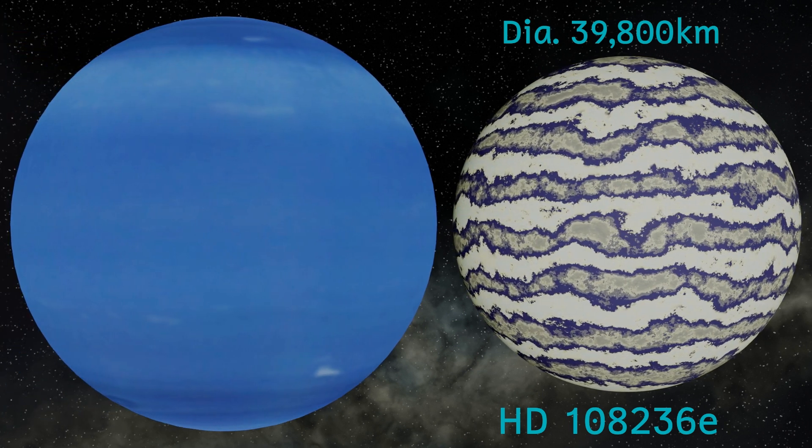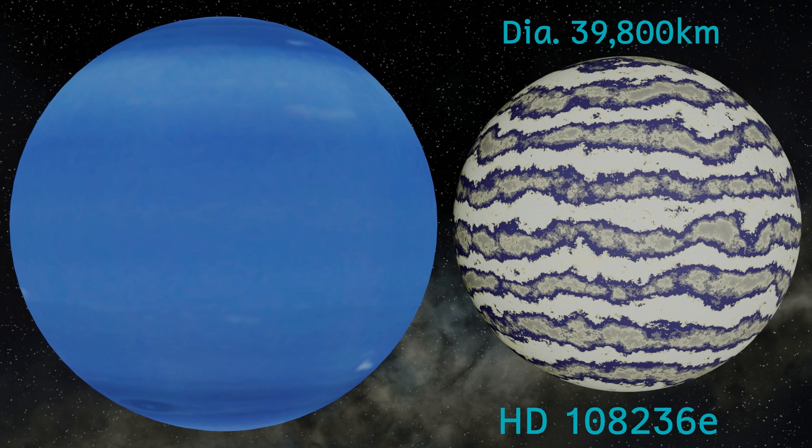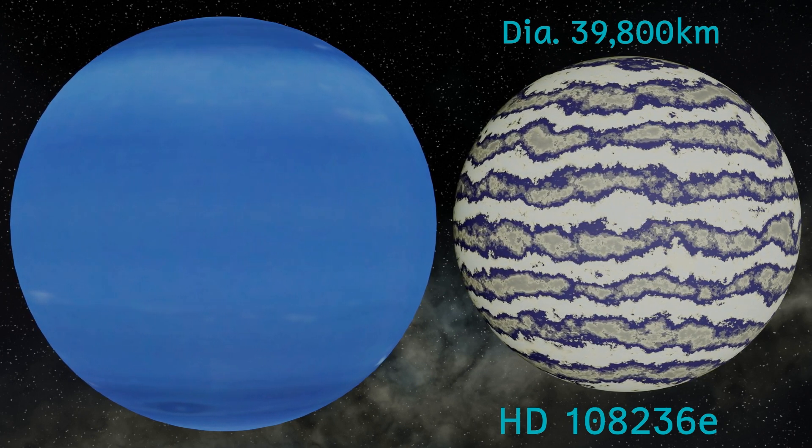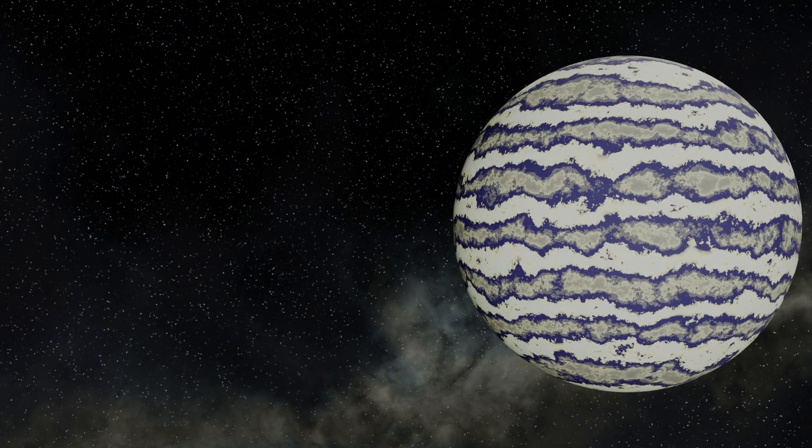It's got a mass of 8.4 times the Earth, and it's thought that this planet has a composition similar to that of the planet Neptune. In other words it's a gas giant. Let us move on and travel to our next destination.